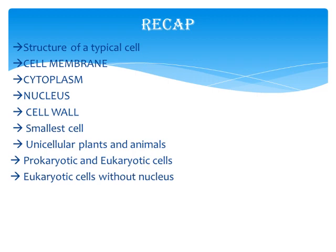Biology becomes much easier when you learn spellings by heart, so try to break spellings and learn them. We also discussed prokaryotic and eukaryotic cells. Prokaryotic cells do not have a complete or organized nucleus — a disrupted nucleus is present which is not bounded by a nuclear membrane and is known as the nucleoid. Eukaryotic cells, meaning 'true nucleus,' have a nucleus bounded by a nuclear membrane.